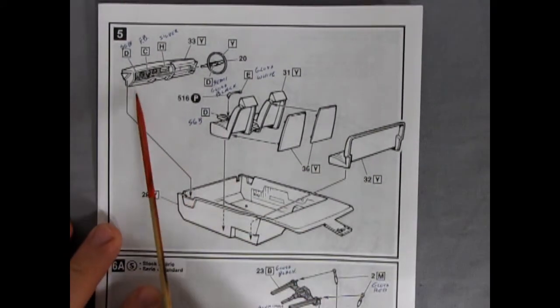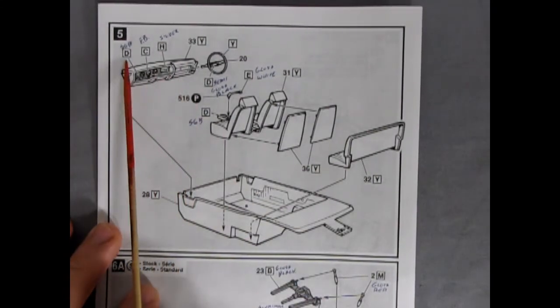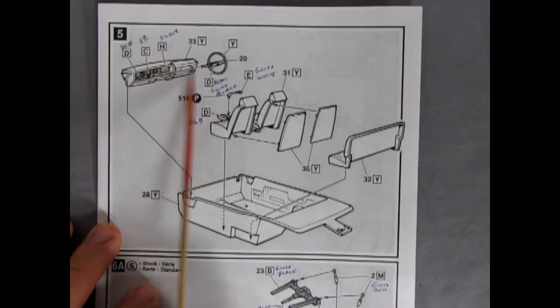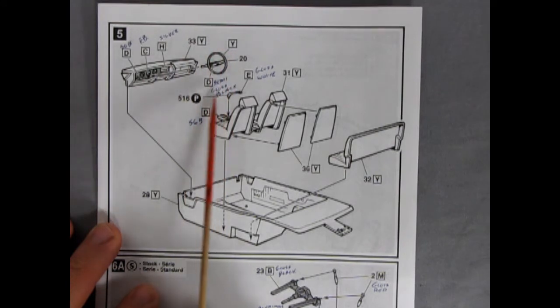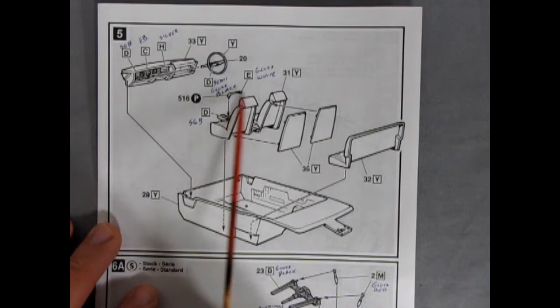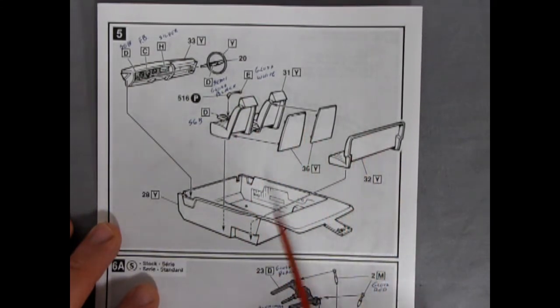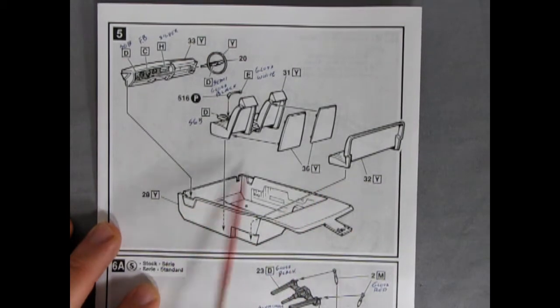Next up we have our interior panel. And there we have our nice dashboard with all this labeled out. Semi-gloss black inside, flat black, silver. There's our nice steering wheel. Our two bucket seats with the console and the shift lever, bucket seat backs, and the bench seat all going into this interior tub. And there is the Y for the body color.